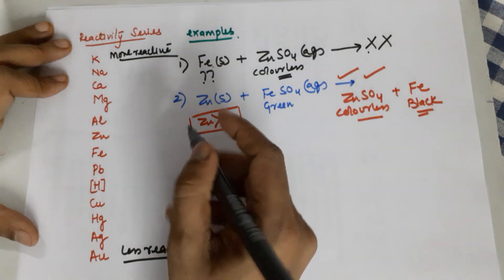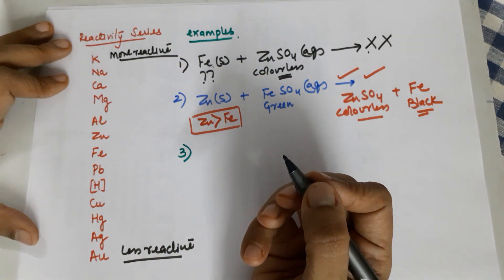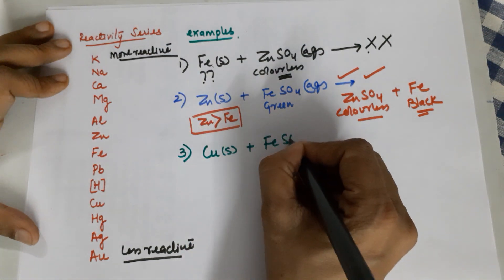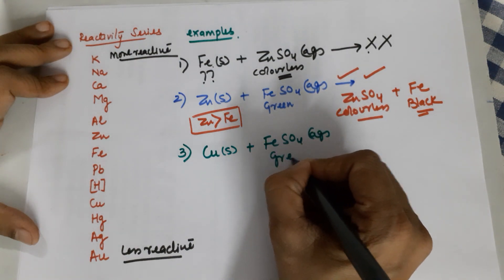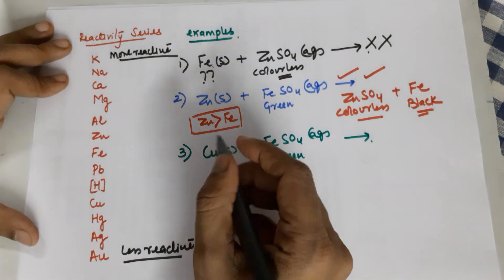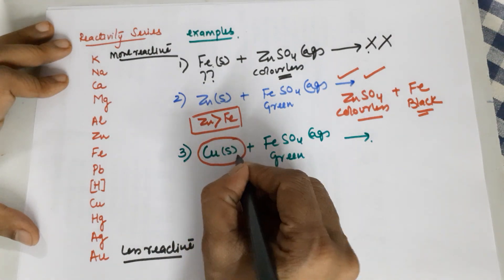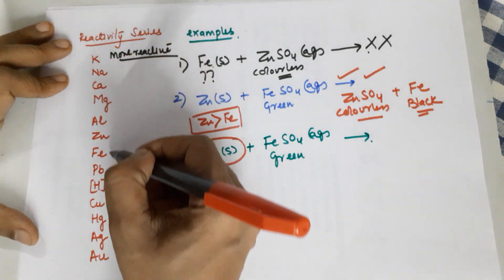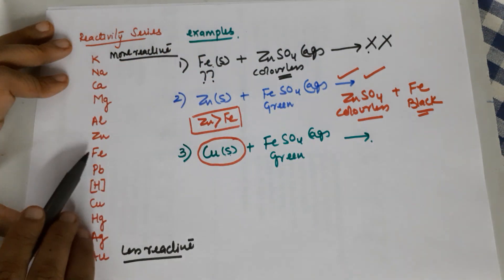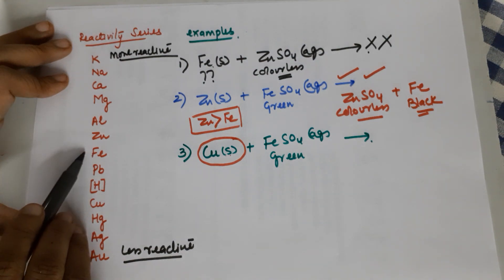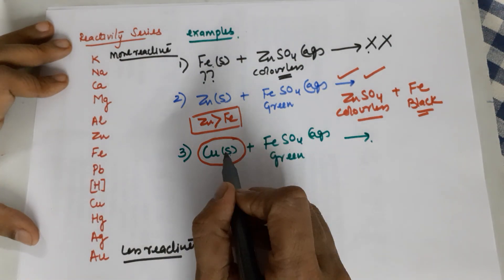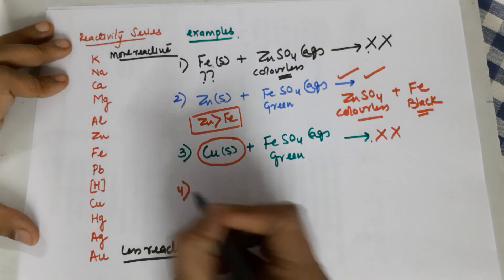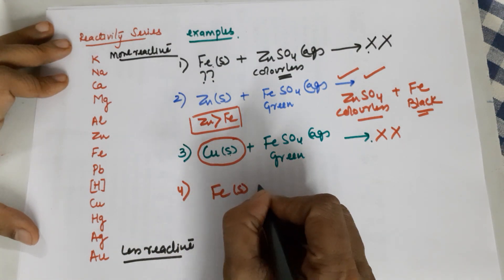Example 3: I drop a piece of copper into iron sulfate solution, which is green in color. Will the reaction happen? Is copper more reactive than iron? Checking the reactivity series — copper is below iron, so iron is more reactive. This means the bond is strong and copper will not be able to remove iron from the salt solution. No reaction.